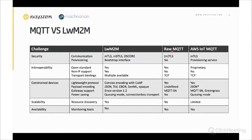Raw MQTT has TLS with an option to configure mTLS. AWS IoT MQTT — a custom protocol developed by AWS on top of MQTT — has mTLS available by default. For provisioning: LwM2M has the bootstrap interface for providing client credentials and setting up access control. Raw MQTT does not address credential provisioning at all, while AWS provides a separate provisioning service.